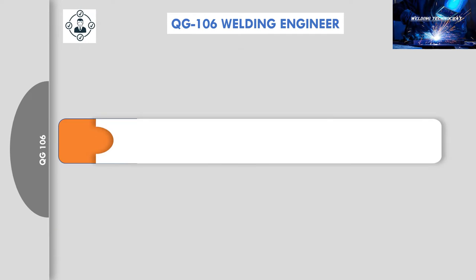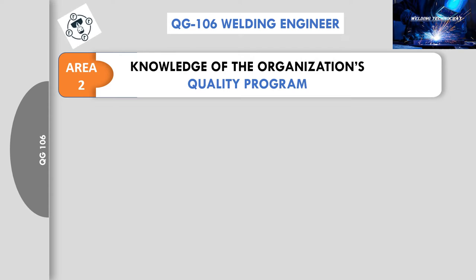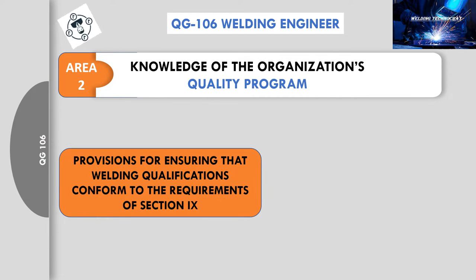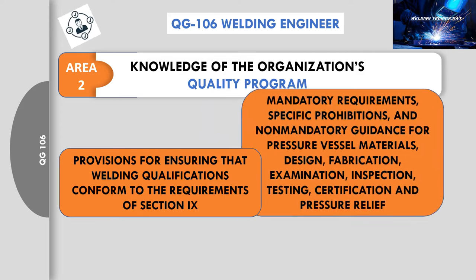Area 2: knowledge of the organization's quality program. The welding engineer should have knowledge about the quality program, which contains written procedures including, as a minimum, provisions for ensuring that welding qualifications conform to the requirements of Section 9.